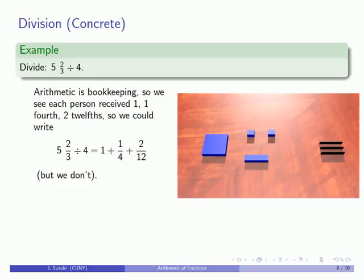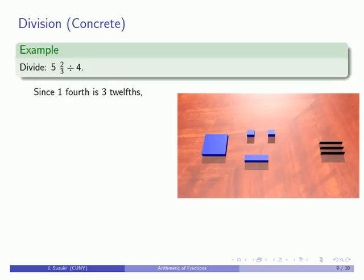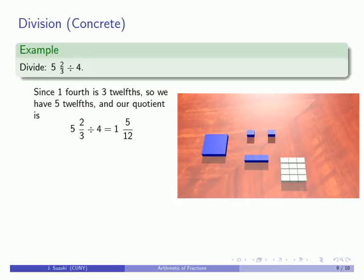But we don't leave the answer this way. We want to write this as a single mixed number. Remember that 1 fourth is 3 twelfths. So all together we have 5 twelfths. Our quotient is 1 and 5 twelfths.